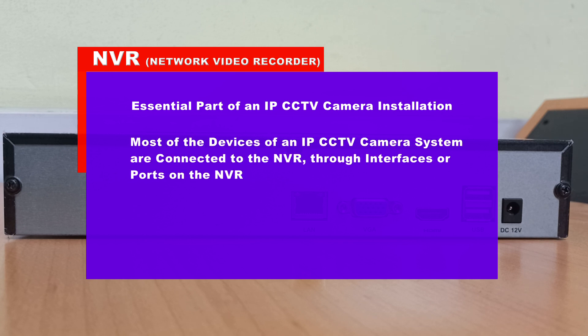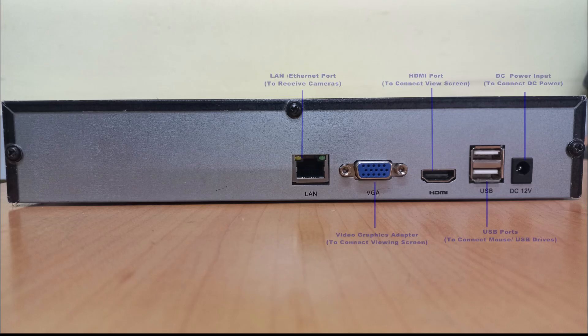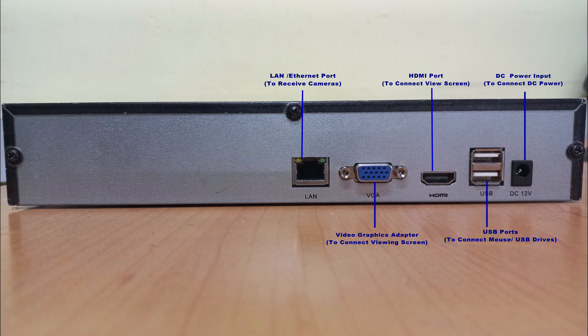Most of the devices of an IP CCTV camera installation are connected to the NVR through interfaces or ports on the NVR, making the NVR a central device in an IP CCTV camera installation. Here are a couple of interfaces or connection ports you can find on an NVR.